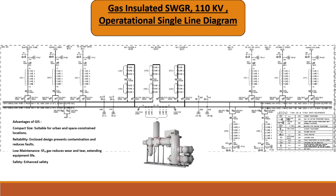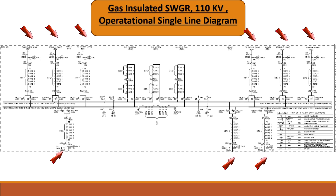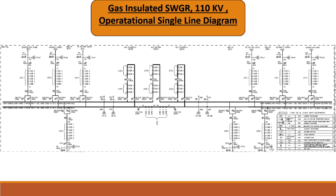In this single line diagram you can see on the top there are six incoming feeders and at the bottom there are three transformer feeders. These incoming feeders can also be used as outgoing feeders. Combined, we call it a feeder, which can receive power from outside or transmit power to outside. Let us understand one typical feeder, which is also called a bay.